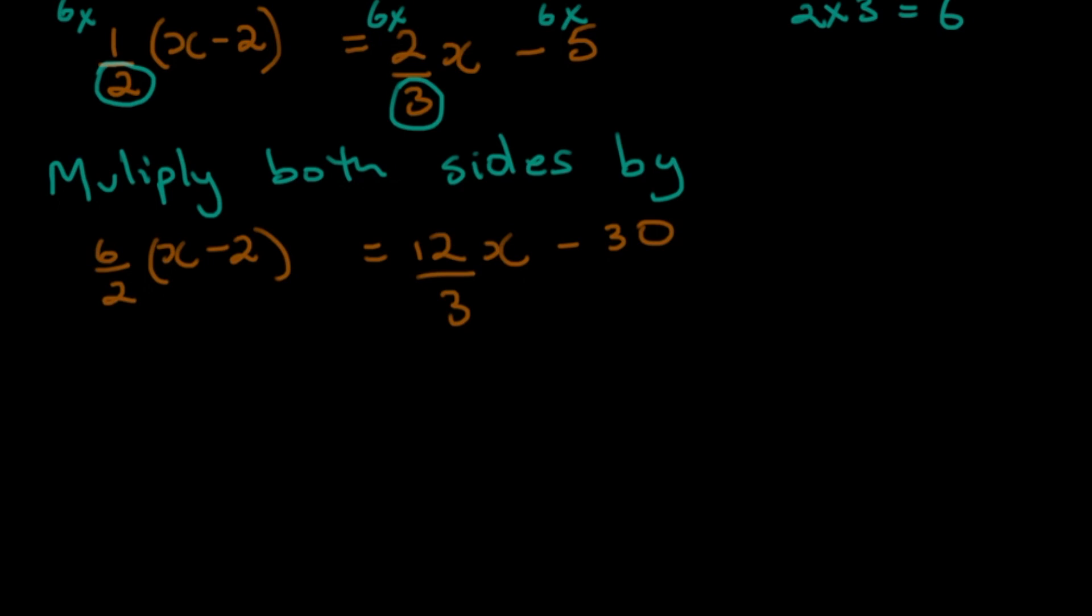We're doing it in steps so then we are going to do some cancellations. So we're gonna say 6 divided by 2, that gives us 3. We're gonna put back the X minus 2. And then simply have 12 over 3. We all know how to do that. That's simply gonna be 4. So that's gonna be 4X minus 30.